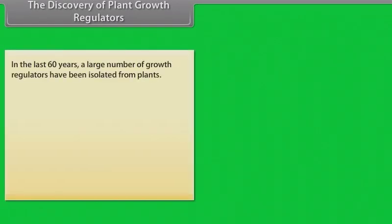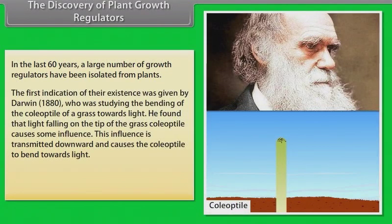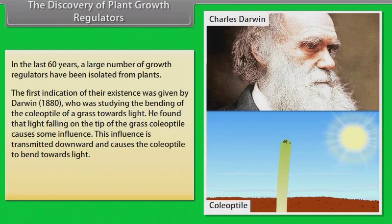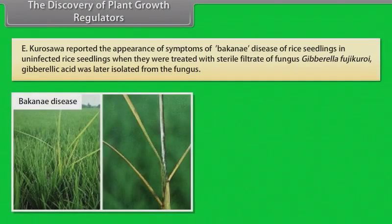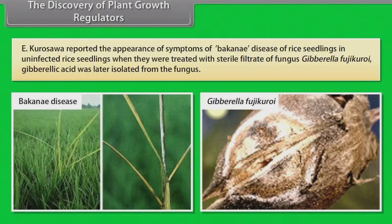The discovery of plant growth regulators. In the last 60 years, a large number of growth regulators have been isolated from plants. The first indication of their existence was given by Darwin, 1880, who was studying the bending of the coleoptile of a grass towards light. He found that the light falling on the tip of the grass coleoptile causes some influence. This influence is transmitted downward and causes the coleoptile to bend towards light. F.W. Went isolated auxin from the tip of the coleoptiles. E. Kurosawa reported the appearance of symptoms of bakanae disease of rice seedlings in uninfected rice seedlings when they were treated with sterile filtrate of fungus Gibberella fujikuroi. Gibberellic acid was later isolated from the fungus.